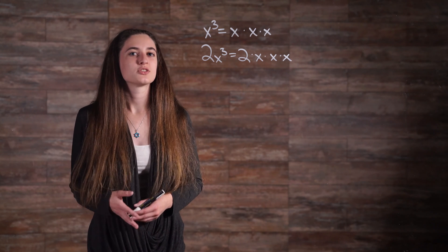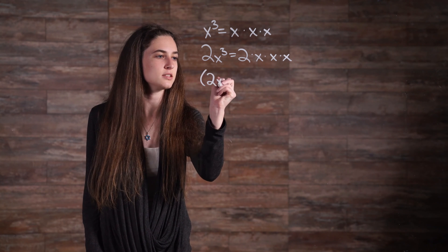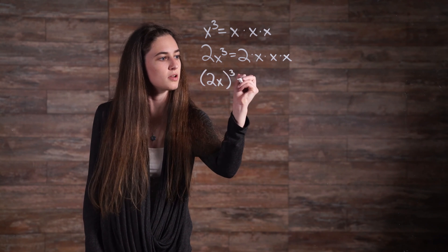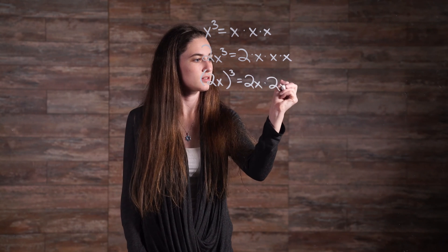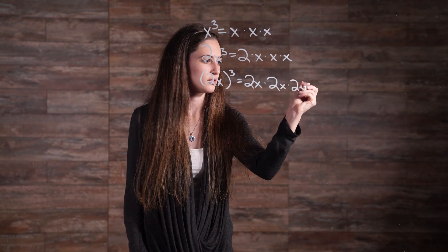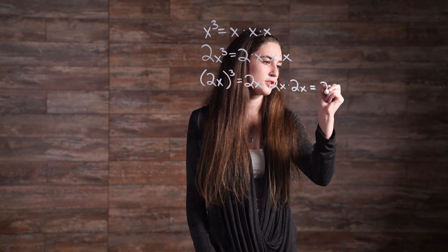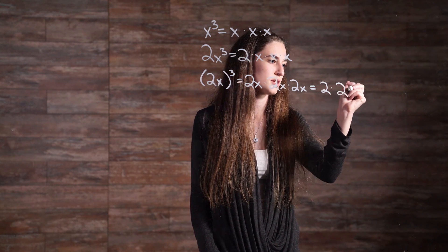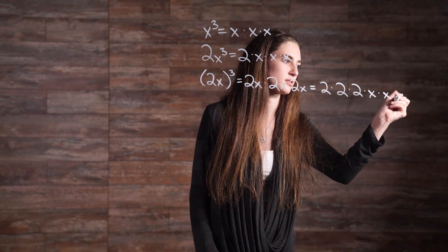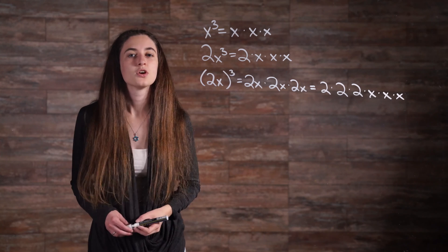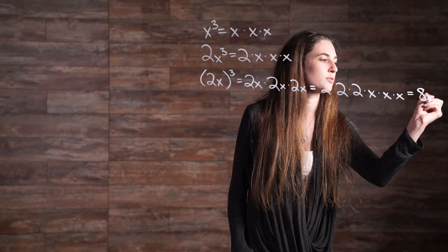Adding parentheses to an expression changes the meaning. If you put in parentheses, 2x cubed means 2x times 2x times 2x, which is equal to 2 times 2 times 2 times x times x times x. Which, when you simplify that, gives you 8x cubed.